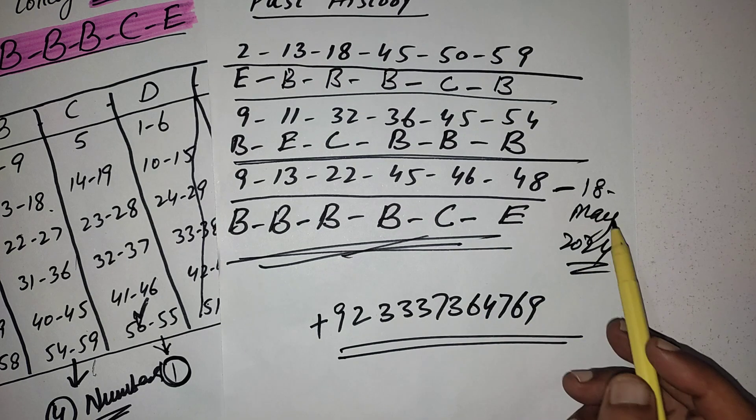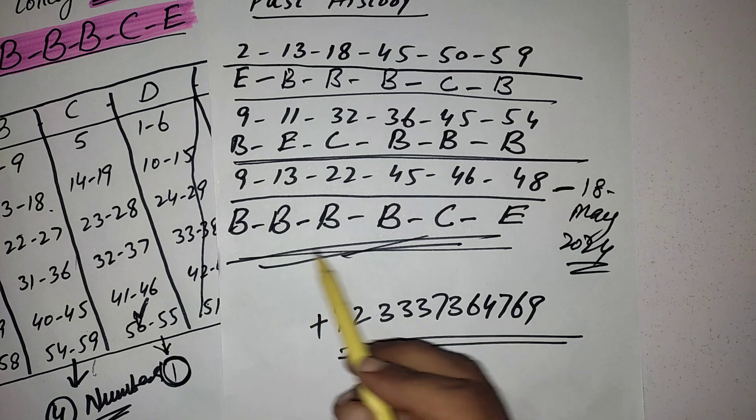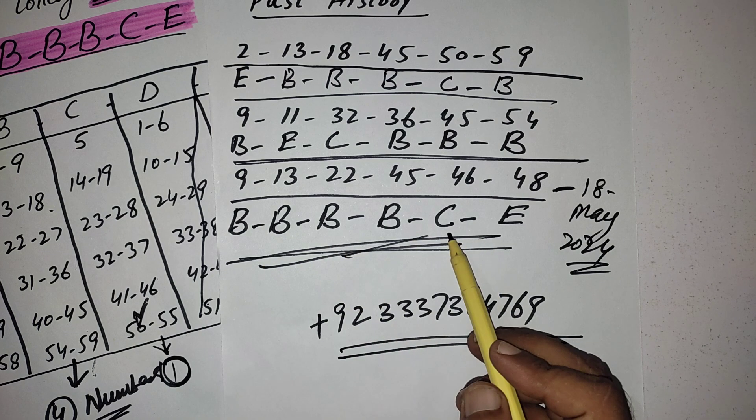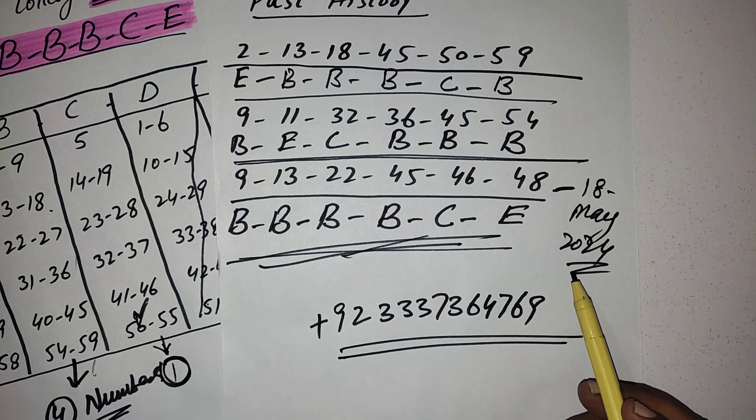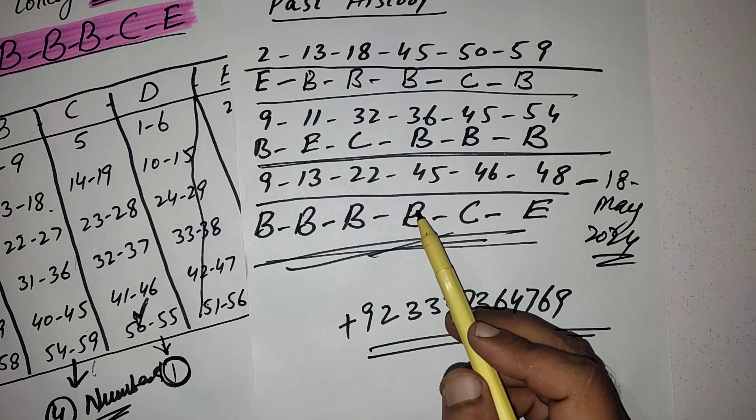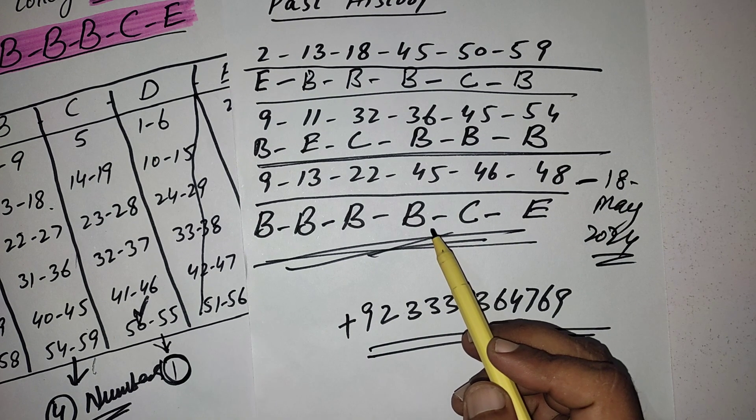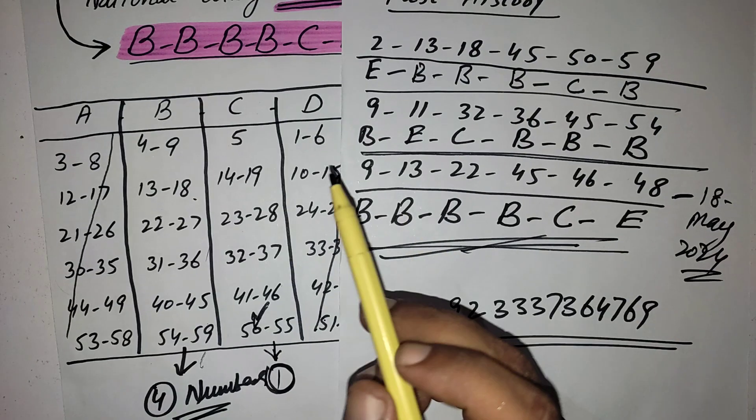Result was drawn on 10th May 2024. You can also check. You can see four numbers again came from B category, one number from C and one number from E. So overall this is my best strategy. You should apply on your future draws. And in this video only I write the three past results. Many in the many past results the numbers came according to this strategy.